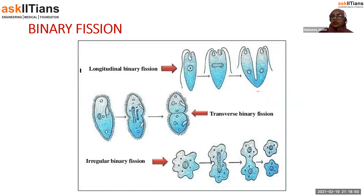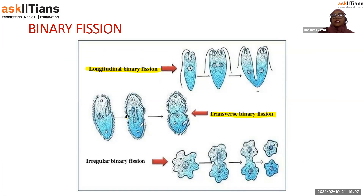There are three types of binary fission in unicellular organisms called protists. First is longitudinal binary fission, where the plane of division is along the length of the animal. Second is transverse binary fission, where the plane of division is along the horizontal plane. And in irregular binary fission, there is no fixed plane of division.